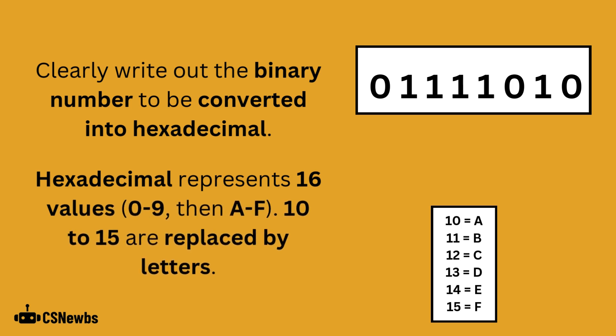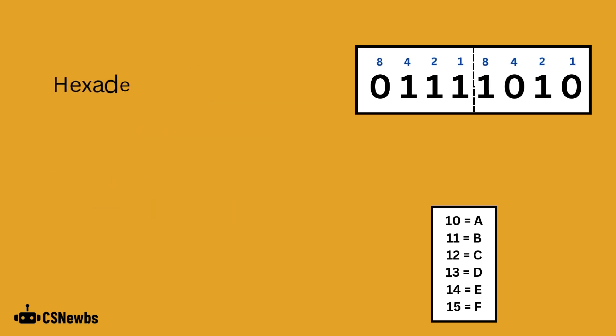10 to 15 are replaced by letters. Hexadecimal works with nibbles, which are groups of 4 bits.